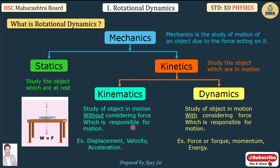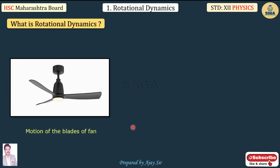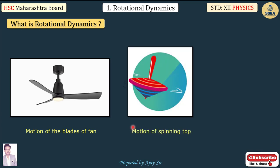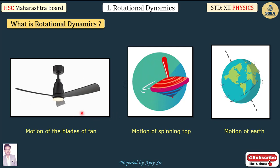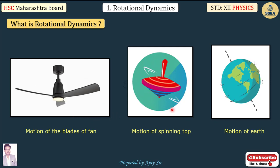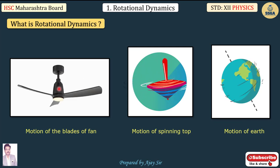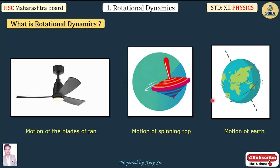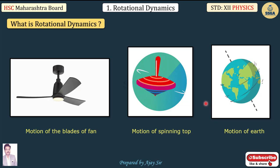Now the second term is 'rotational'. Examples include the motion of the blades of a fan, the motion of a spinning top, and the motion of the Earth. All these objects are rotating about one point or one axis, which is called rotational motion.